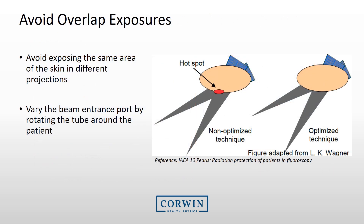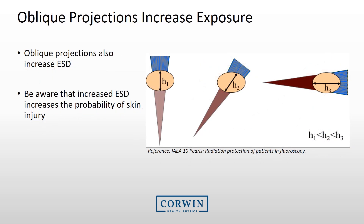When possible, avoid exposure of the same area of skin in different projections. Vary the beam entrance by rotating the tube around the patient. Keep in mind that oblique projections have higher skin doses than AP or PA projections, and an increased number of oblique projections leads to higher skin doses and increases the probability of skin injury.